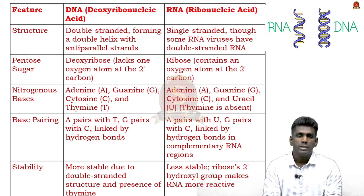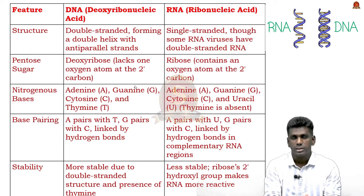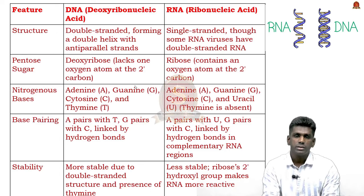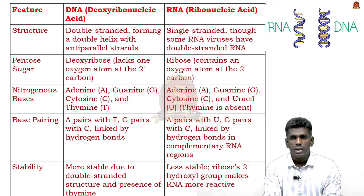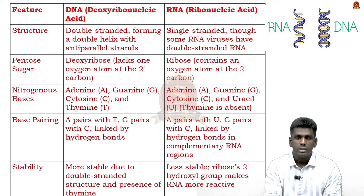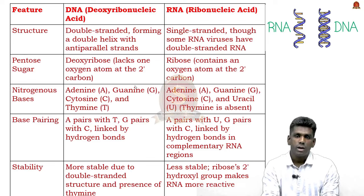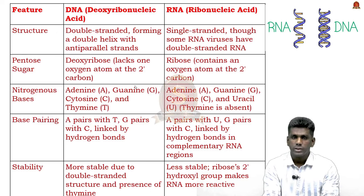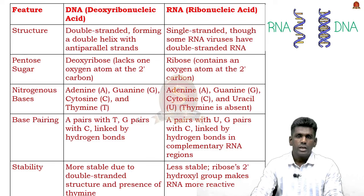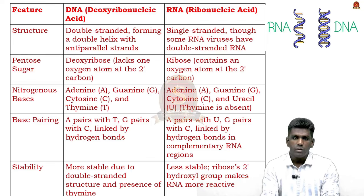Regarding structure: DNA is double-stranded with a double helix anti-parallel structure, while RNA is single-stranded (though some RNA viruses have double-stranded RNA). DNA contains deoxyribose sugar; RNA contains ribose. For nitrogenous bases, DNA has adenine, guanine, cytosine, and thymine (AGCT), while RNA has adenine, guanine, cytosine, and uracil (AGCU) — thymine is absent in RNA and replaced by uracil. DNA is more stable due to its double-stranded structure and the presence of thymine; RNA is less stable.